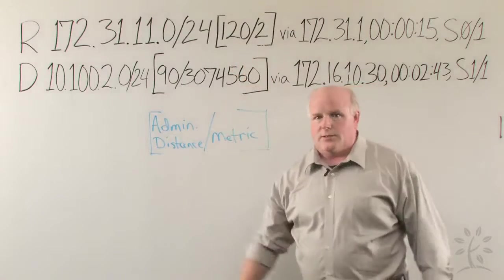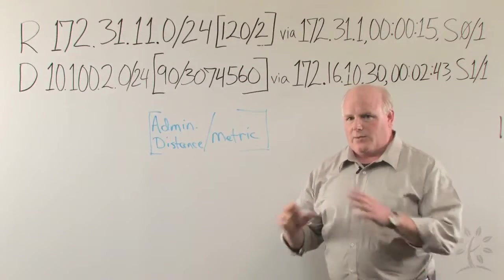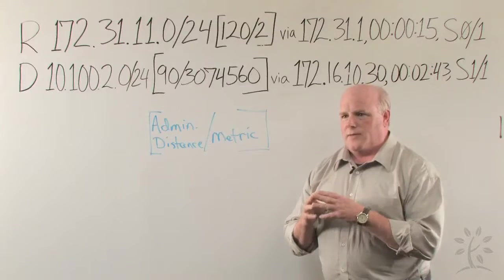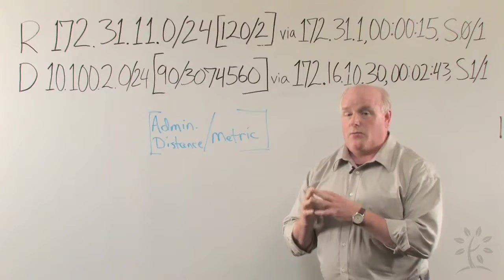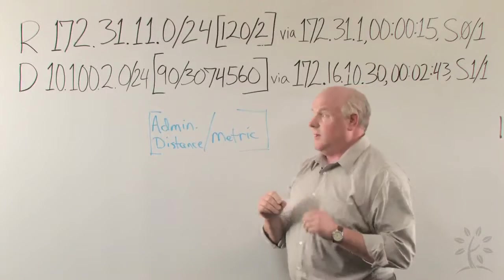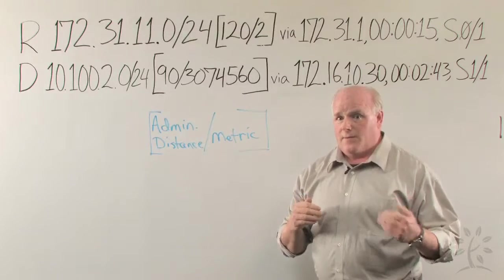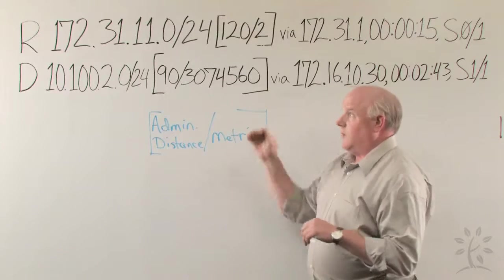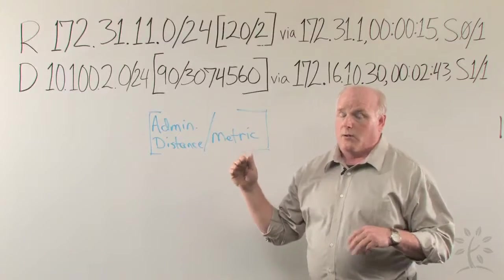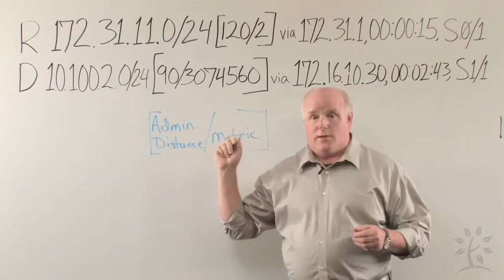The 120 is the administrative distance. That is a little bit different thing. The administrative distance is how we calculate the reliability of routing protocols, routes and routing protocols. 120 is the default for RIP, and other protocols have different administrative distances. The more reliable the protocol, or the more sophisticated the protocol, the lower the administrative distance.